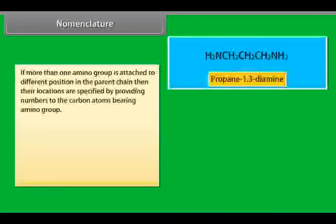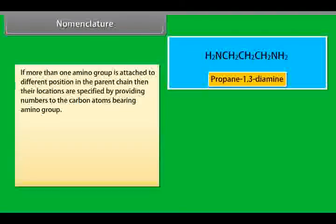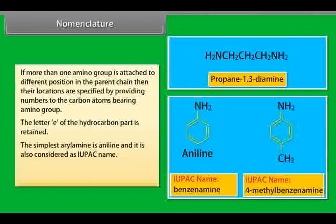If more than one amino group is attached to different position in the parent chain, then their locations are specified by providing numbers to the carbon atoms bearing amino group. The letter E of the hydrocarbon part is retained. The simplest aryl amine is aniline and it is also considered as IUPAC name.